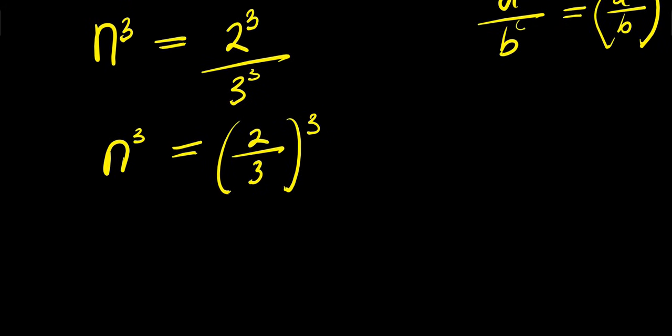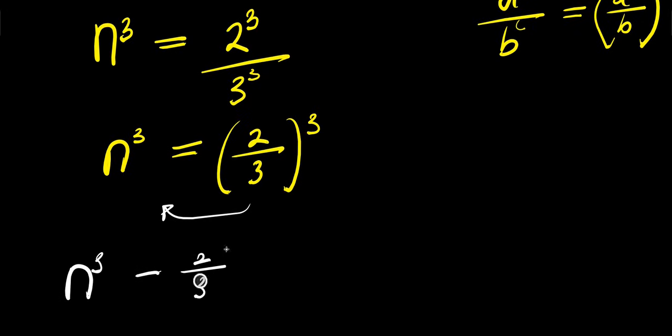So from here, I can take this over here. I have n³ minus (2/3)³ equals 0.